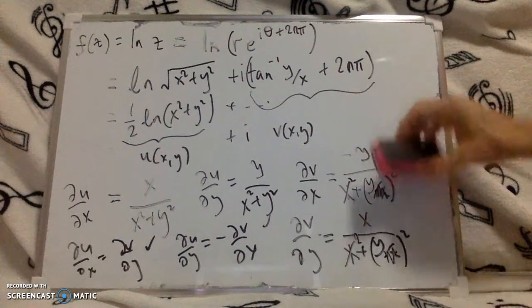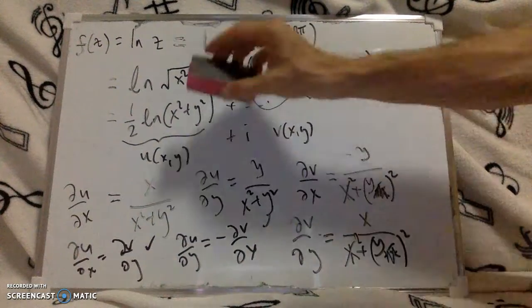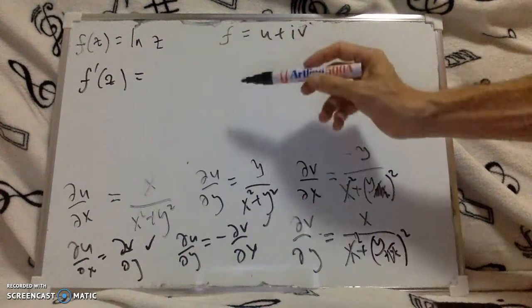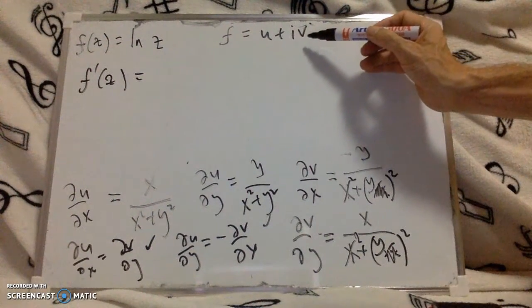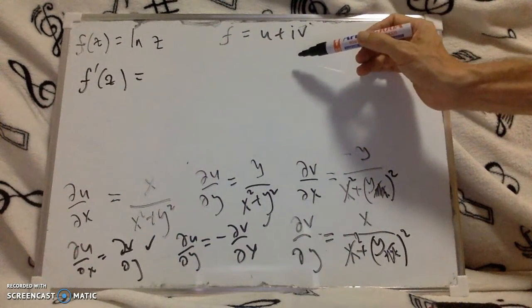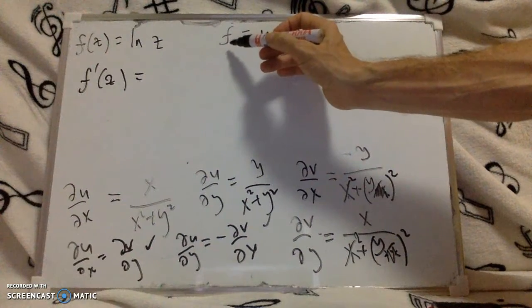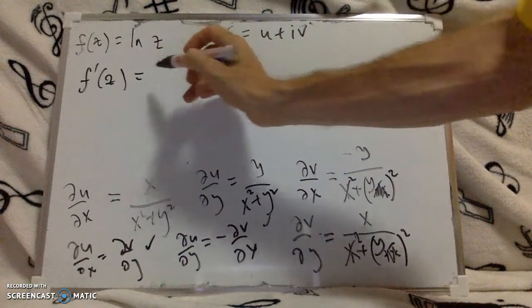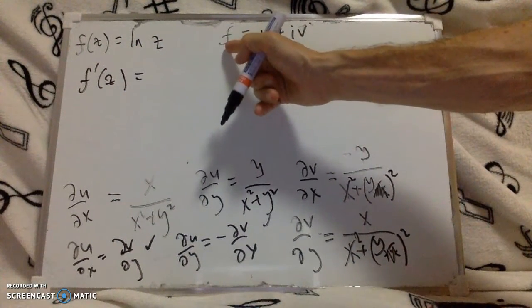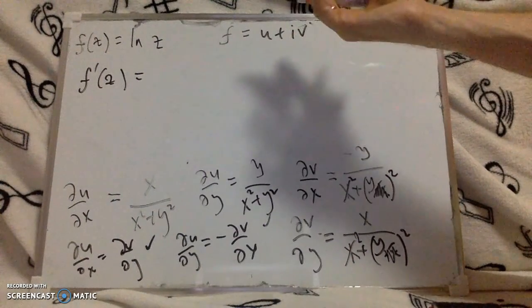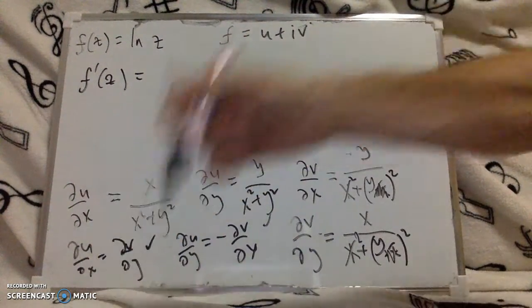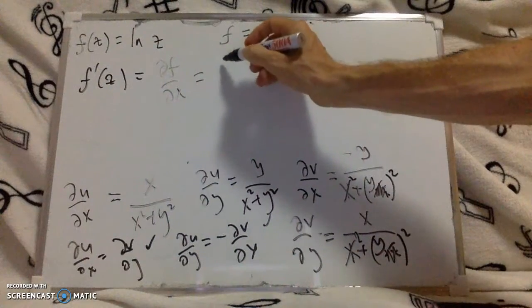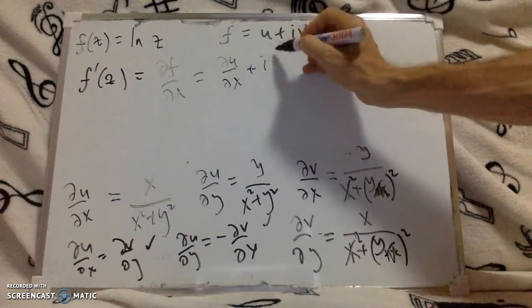The last part of the question then asks you to find the derivative f dashed. So the derivative f dashed, remember that f itself we've written as u plus iv. The derivative, the whole point of the derivative is that it's independent of the direction, so I can choose to find f dashed by differentiating f with respect to x, or I can differentiate with respect to iy, but the easiest option is actually differentiate with respect to x. So I can work it out this way, df by dx which is du by dx plus i dv by dx.